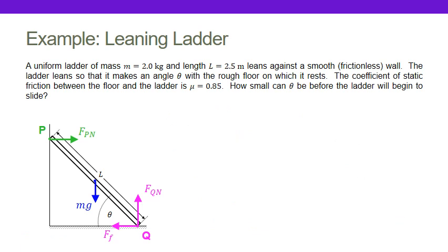So I can begin to use torques. I know I'm going to use the fact that the sum of all torques about some axis equals the moment of inertia of the ladder about that axis times the angular acceleration. But since it's in static equilibrium, the angular acceleration is zero.